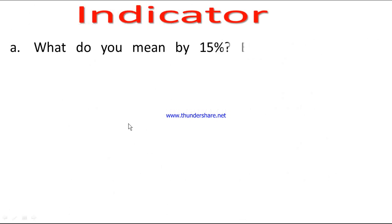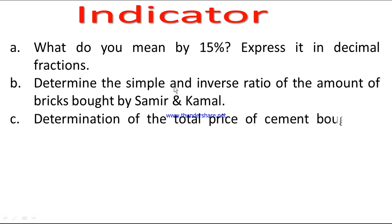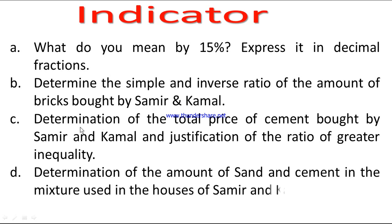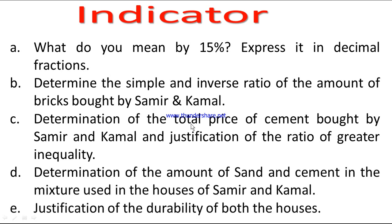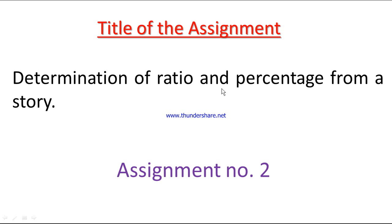Indicator: (A) What do we mean by 15%? Express it in decimal fractions. (B) Determine the simple and inverse ratio of the amount of bricks bought by Samir and Kamal. (C) Determine the total price of cement bought by Samir and Kamal and justification of the ratio of greater inequality. (D) Determine the amount of sand and cement in the mixture used in the houses of Samir and Kamal, and justification of the durability of both houses. Title of the assignment: Determination of ratio and percentage from a story. Assignment number 2.